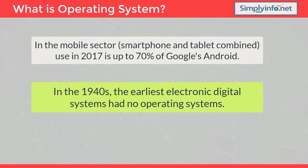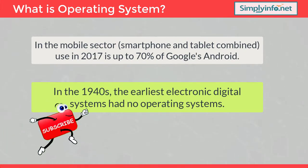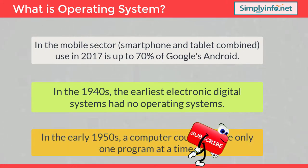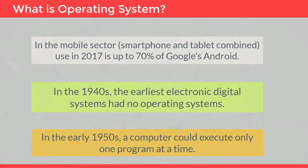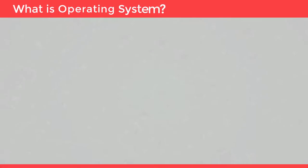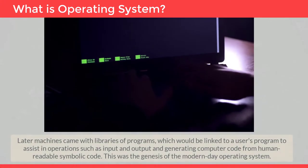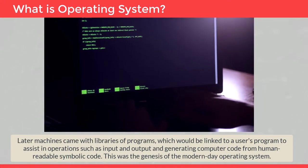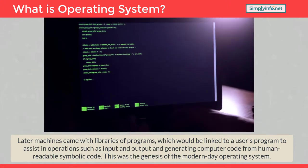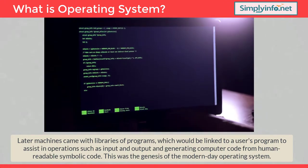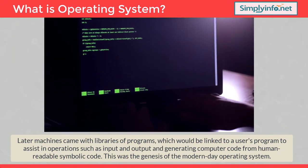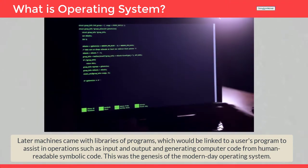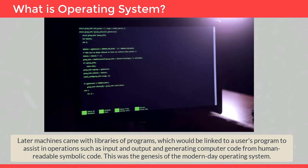In the 1940s, the earliest electronic digital systems had no operating systems. In the early 1950s, a computer could execute only one program at a time. Later, machines came with libraries of programs which would be linked to a user's program to assist in operations such as input and output and generating computer code from human-readable symbolic code. This was the genesis of the modern-day operating system.